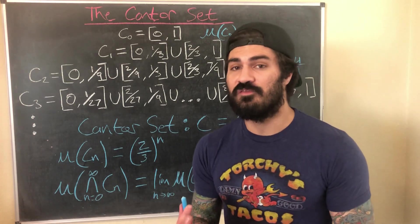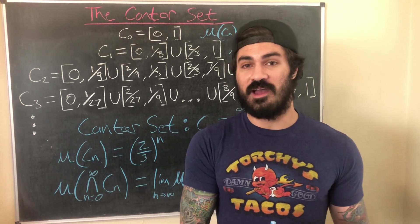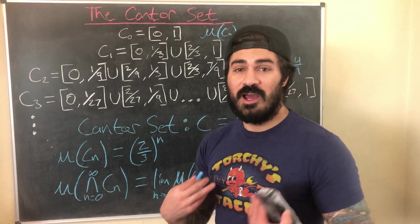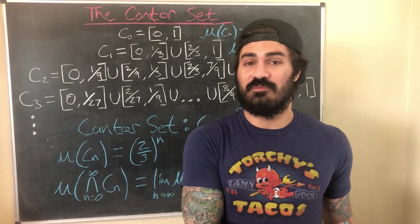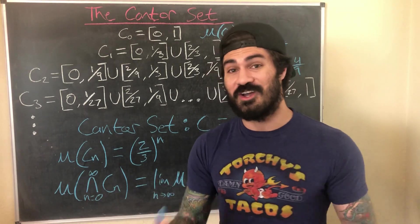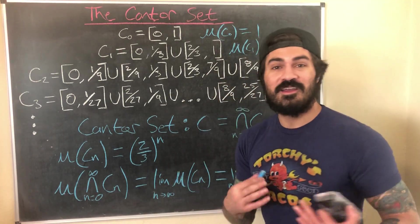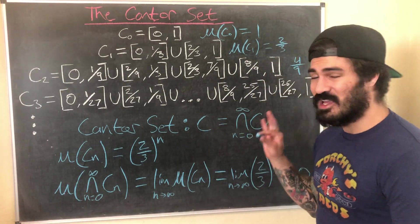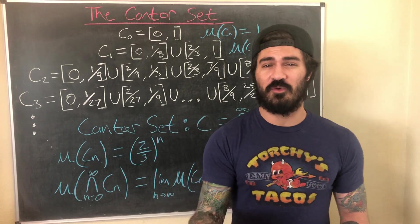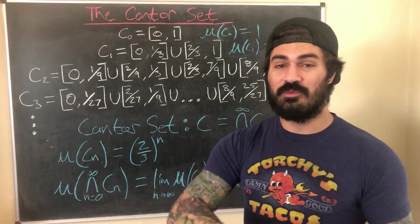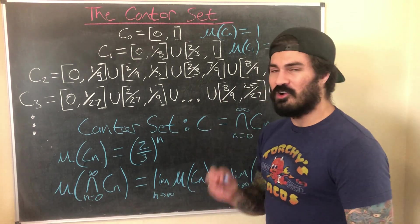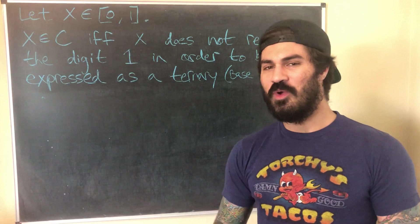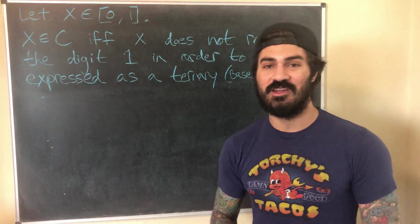That fact made me want to assume the converse — that any set of measure zero must be countable — but that's not true, and the Cantor set is a clear counterexample. Now we're going to define the Cantor set more precisely using the base-three system, and then outline a proof that the Cantor set is in fact uncountable.